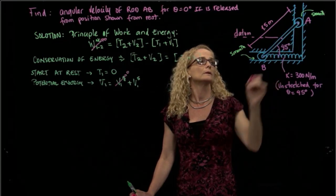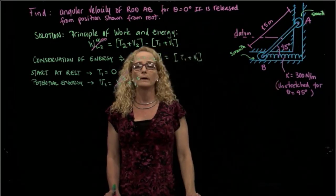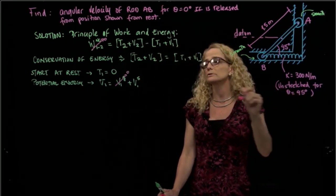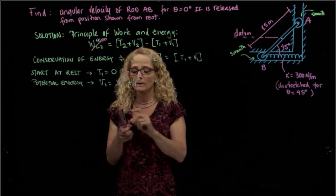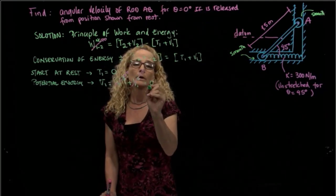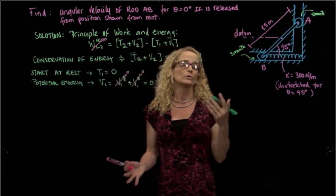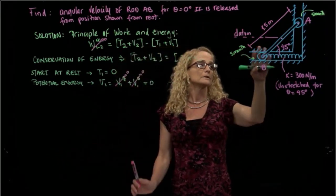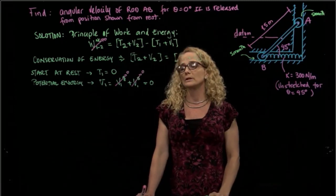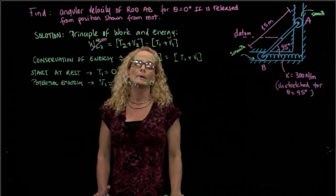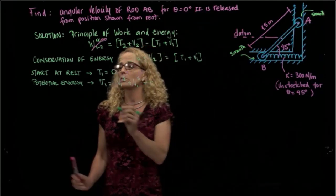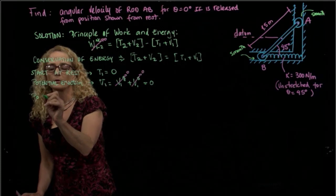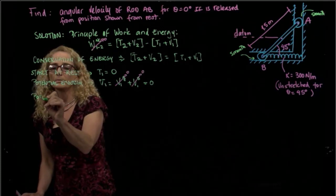This is the center of gravity of the bar. The spring is unstretched for that position, so that is zero too. Both forces contributing to potential energy — gravity and the spring — are zero at position one, so our total potential energy at position one is zero. Now let's calculate the potential energy for position two.